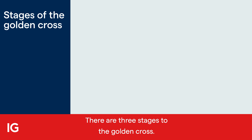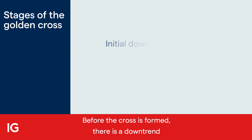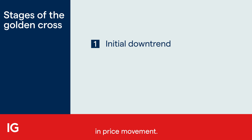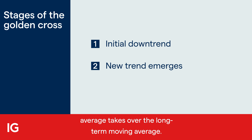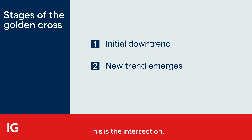There are three stages to the golden cross. Before the cross is formed, there is a downtrend in price movement. Then a new trend emerges, whereby the short-term moving average takes over the long-term moving average. This is the intersection.